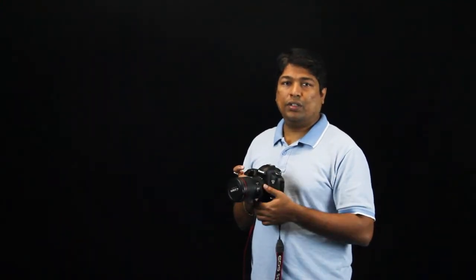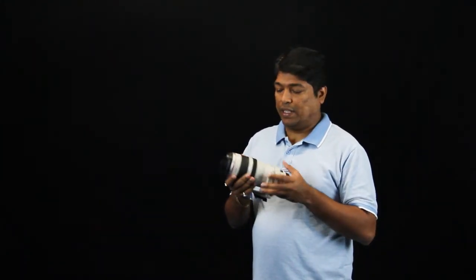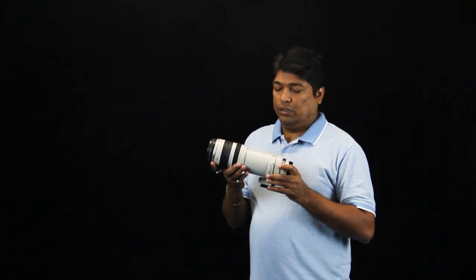So this is a rule of thumb. However, with image stabilizer, you can still get away with a little bit lower shutter speed as well. That was easy with wide-angle lens, but if you've got a zoom lens like I've got - this one is 100 to 400.